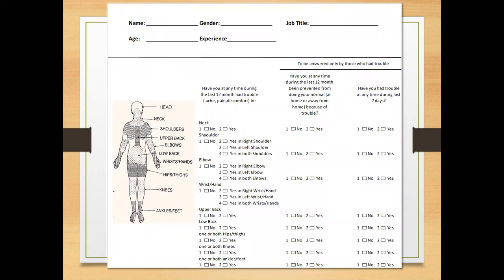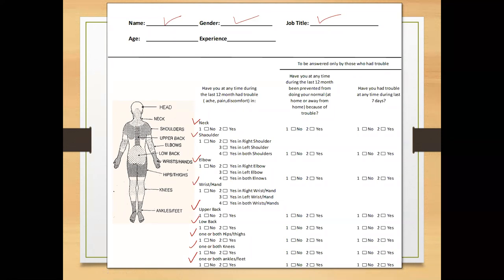There are three sets of questions in this questionnaire. Before those questions are discussed, some basic information needs to be filled in: the name of the person being surveyed, gender, job title, age, experience, and so on. The first question is: have you at any time during the last 12 months had trouble, ache, pain, or discomfort? The nine body parts covered are: neck, shoulder, elbow, wrist and hand, upper back, lower back, one or both hips and thighs, one or both knees, and ankles and feet.